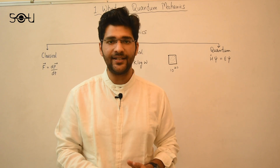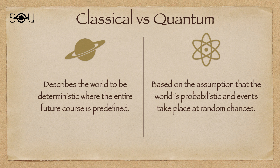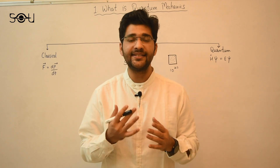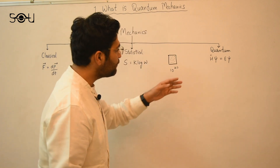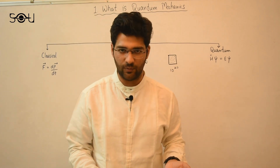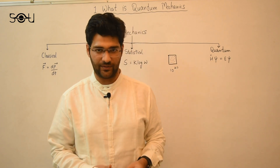Quantum mechanics, the third type of mechanics, is completely different from classical and statistical mechanics. If classical physics describes the world as deterministic — where the entire future course is pre-decided — quantum mechanics is based on the assumption that the world is probabilistic and events take place at random chances. The most important quantity in quantum mechanics is the state of a system, or the wave function. The flagship equation is the Schrödinger wave equation; you can also use the Dirac equation, which is relativistic, unlike the Schrödinger wave equation.